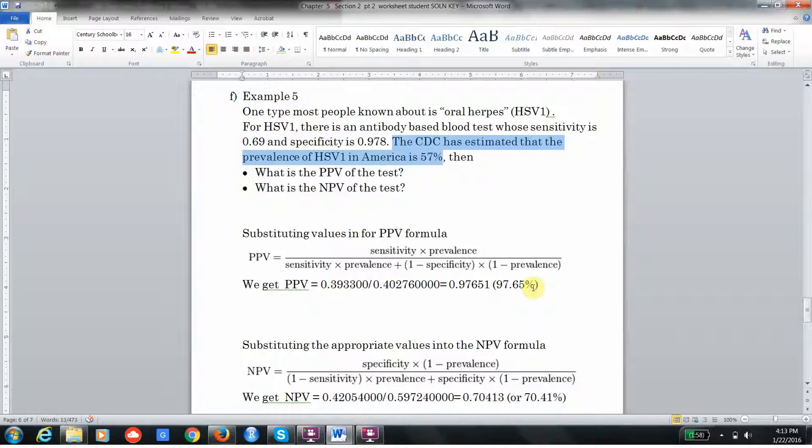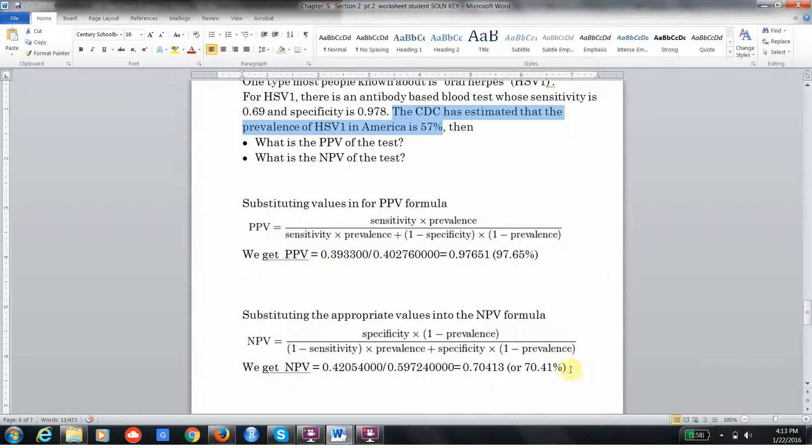Interestingly, when you do the NPV, it actually decreases. It's because the test is actually worse and the prevalence is still pretty high here. You end up getting about 70%, which is not good, because what it means is that when you have a negative test result there's still a 30% chance you could have it. That's not good. This is one of those cases that we talked about earlier where we said the worst thing that could happen is you could have a false negative. Here the chance of a false negative is actually very high—about 30%. That's not good.